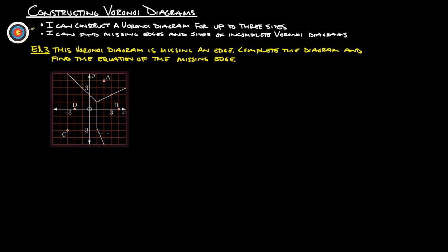Okay, this next example 3, this Voronoi diagram is missing an edge. Complete the diagram and find the equation of the missing edge. So, it's going to be between this C and D here. So if you look at between C and D, we go up 1, 2, 3, over 1. So we're up 3. Up 3 over 1. Divide really both of those by 2, and we get 1.5 and 0.5. So really from C, we can go up 1.5 and then over 1.5. There's our midpoint between C and D. And then really here's our slope, it's up 3 over 1. So if we flip that and switch it, it's now 1 over 3, and it's now negative.